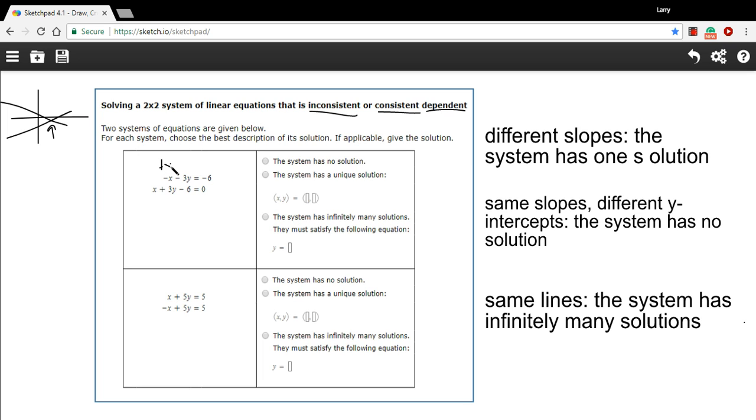So on this one, I'd add x first. We would get negative 3y equals x minus 6. Then we can divide both sides by negative 3. So x over negative 3, I'm going to write that as negative one-third x, just so that the slope is obvious. And negative 6 divided by negative 3 is a positive 2. So there's my first equation.